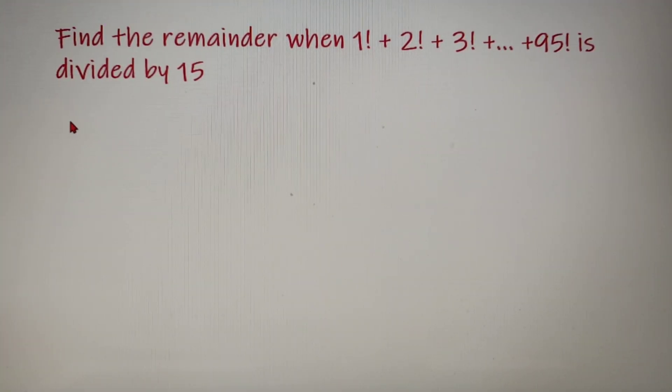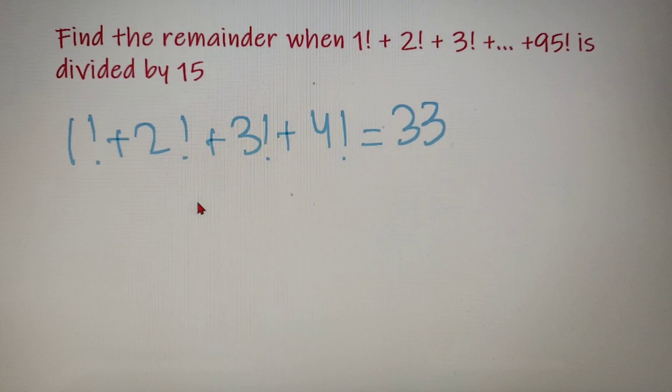So the sum of first 4 factorials is as follows: 1 factorial plus 2 factorial plus 3 factorial plus 4 factorial and the result is equal to 33. So our answer would be 33 mod 15. So 33 mod 15 gives the result as 3.